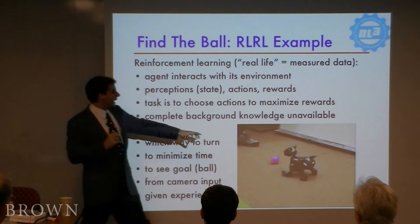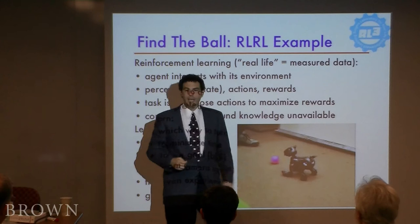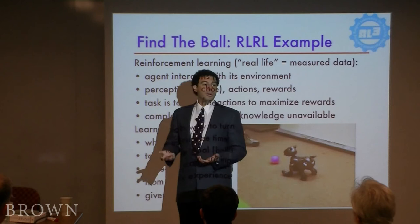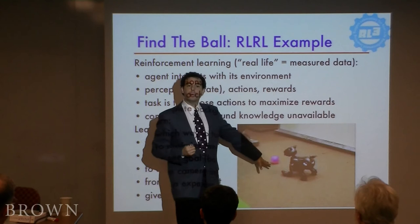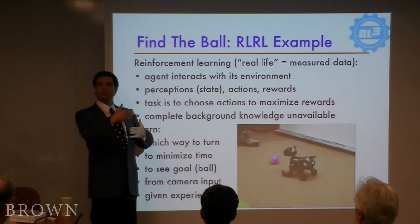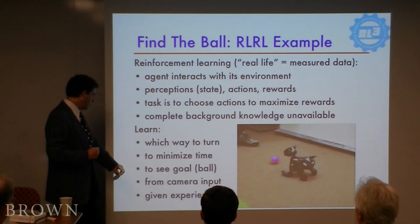In reinforcement learning, we worry about delayed rewards. If the ball is there and I'm the dog facing away from the ball, I have two choices — go left or go right. Neither has a payoff immediately. It's only after a series of actions, and only a small number of series of actions, that actually get the reward quickly. So it has to make decisions in light of the fact that feedback is not immediate. That's real life RL in a nutshell.